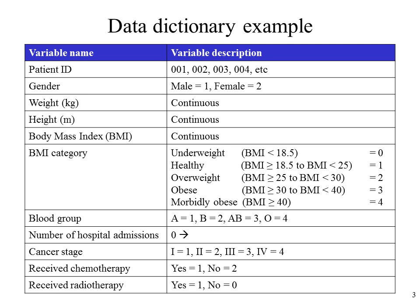Whereas for blood group, there are also four categories: A, B, AB, and O. But in this case, it doesn't matter what order I have the various labels.